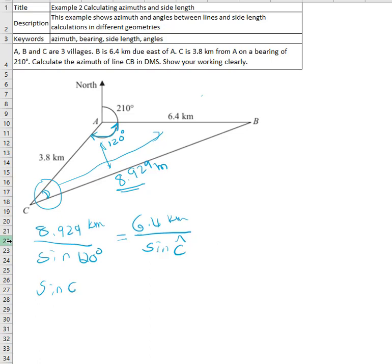Sine C angle equals 6.4 multiplied by sine 120 degrees divided by 8.929.